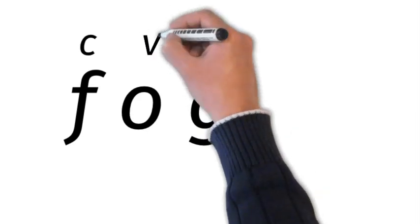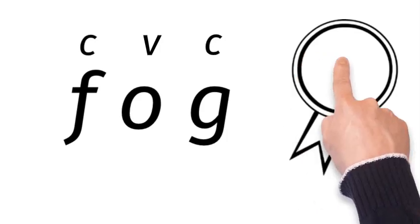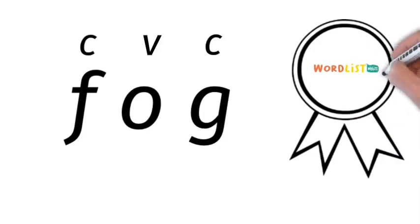The F is a consonant, the O is a vowel, A-E-I-O-U, and the G is a consonant. So it's a C-V-C word. The vowel is like the glue that sticks the consonants together.